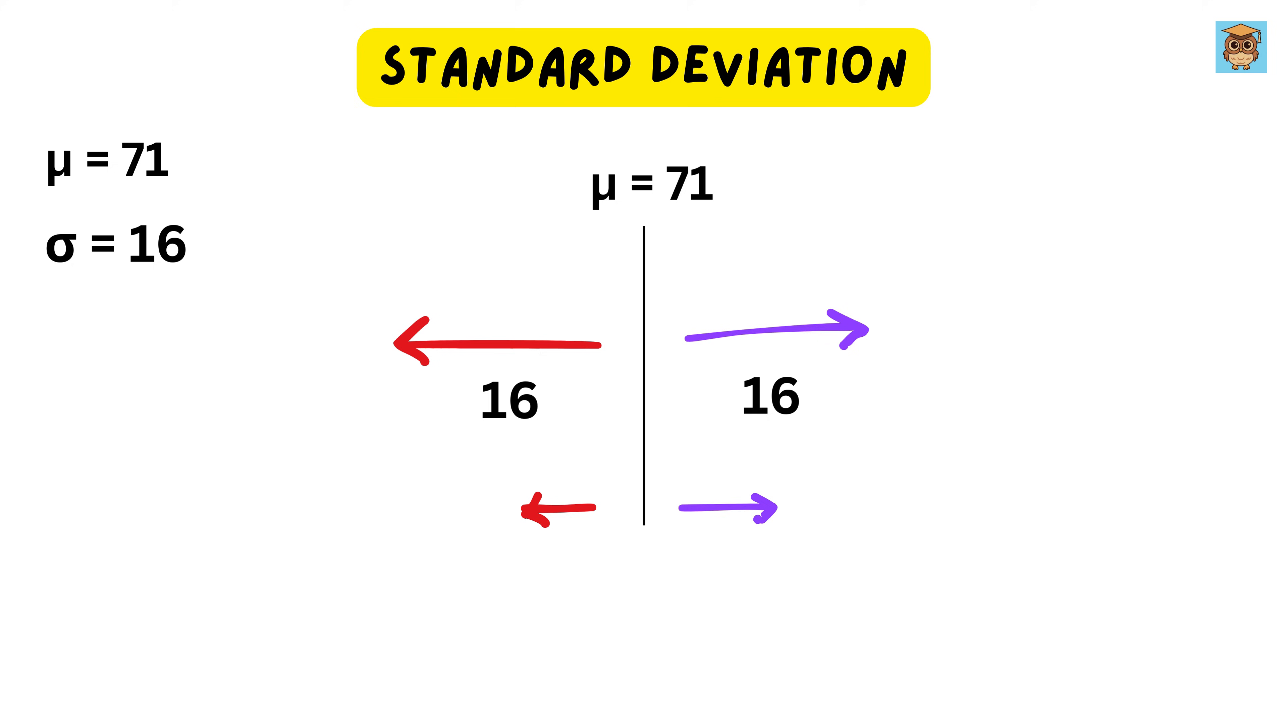If the standard deviation were small, like 5, it would mean the scores were tightly packed around 71. If it were large, like 30, it would mean the marks were widely spread out. So, by calculating the standard deviation, we go beyond just knowing the average. We get a clear picture of how spread out the data really is.